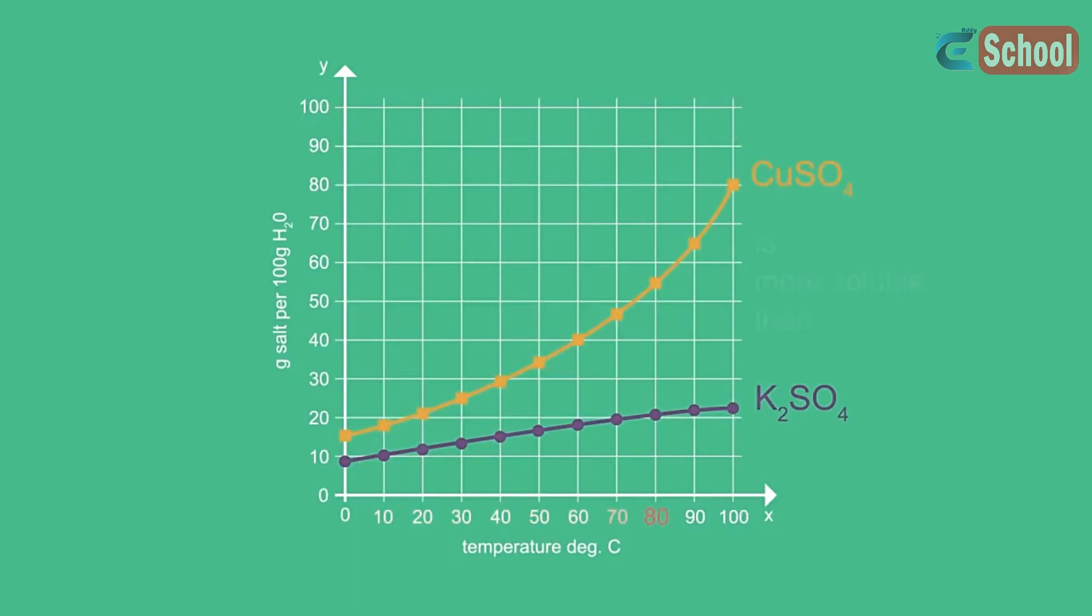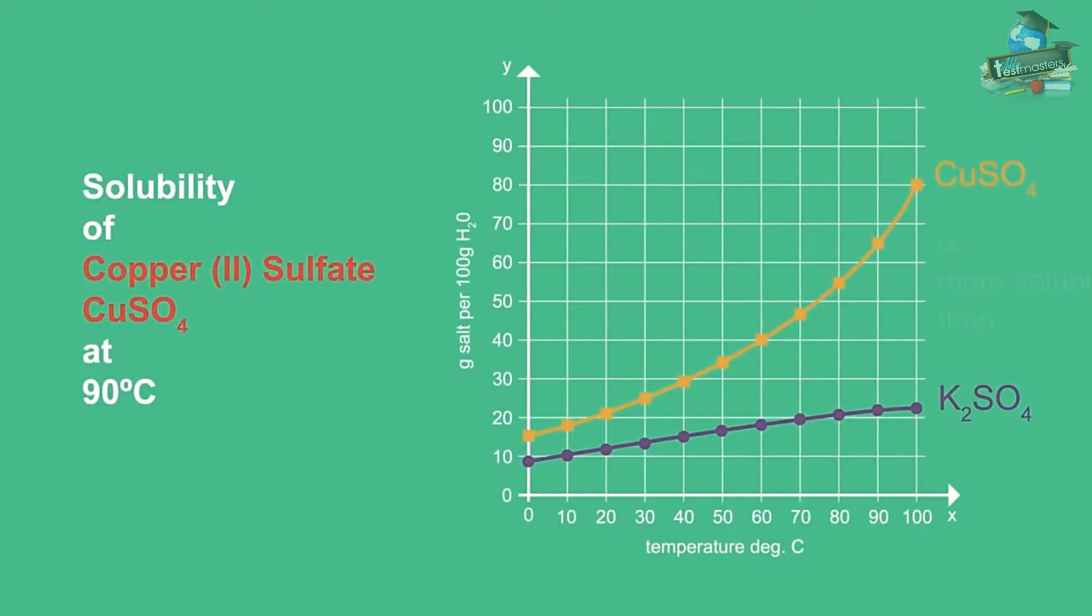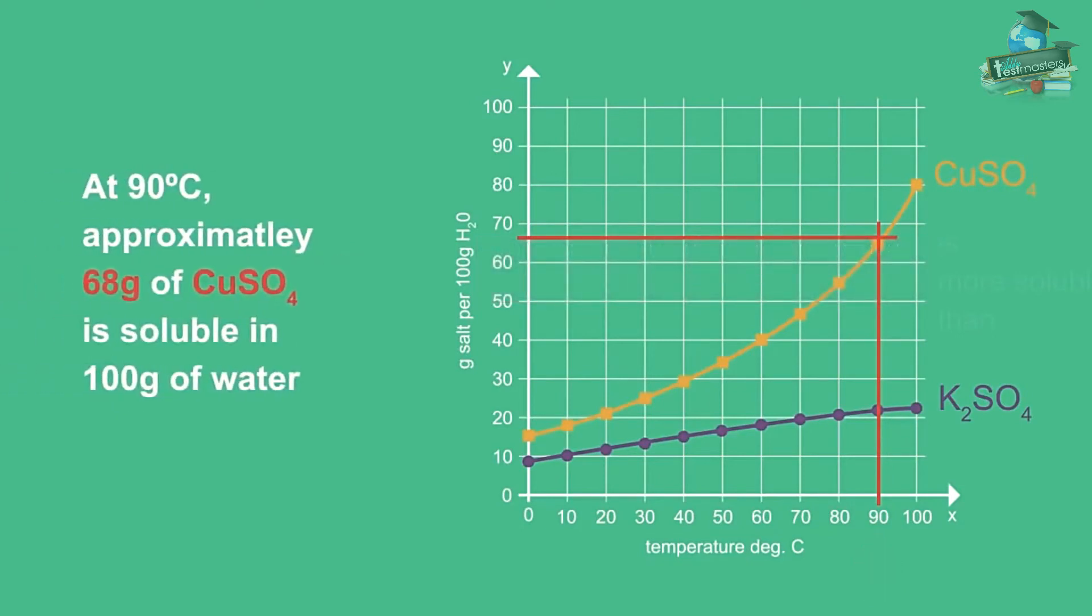From a solubility curve it is also possible to find solubility at a certain temperature. Let's say we wanted to find the solubility of copper(II) sulfate at 90 degrees Celsius. Take a ruler and draw a vertical line starting at the x-axis at 90 degrees Celsius until it reaches the curve, then draw a horizontal line from the point on the curve until it reaches the y-axis. At 90 degrees Celsius, approximately 68 grams of copper(II) sulfate is soluble in 100 grams of water.